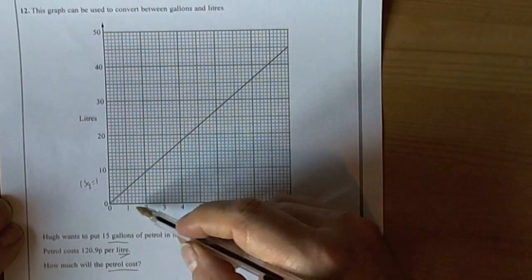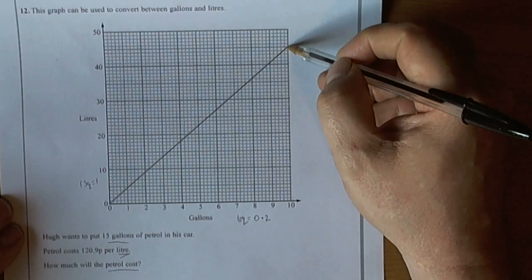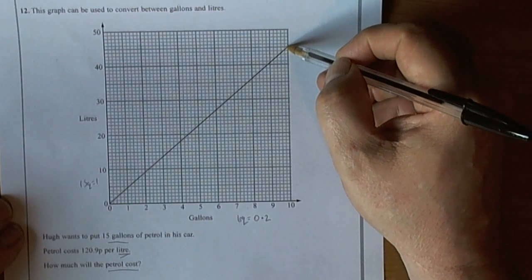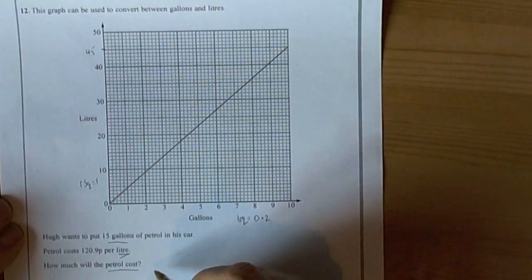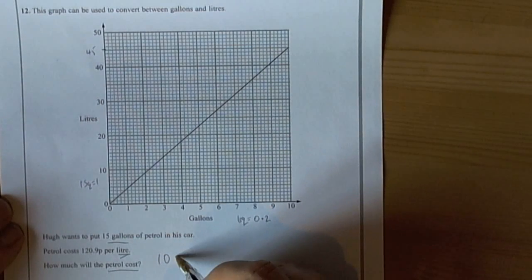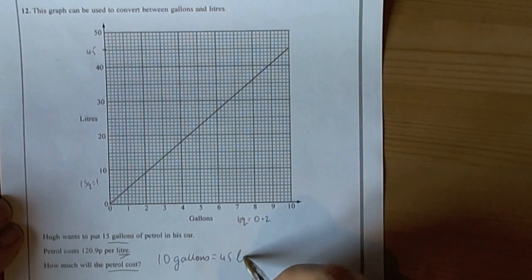So to me, if we go for 10 gallons, we can see that the line, the conversion line, goes straight through at 45 litres. So one factor we could use that seems to be quite useful is 10 gallons is 45 litres.